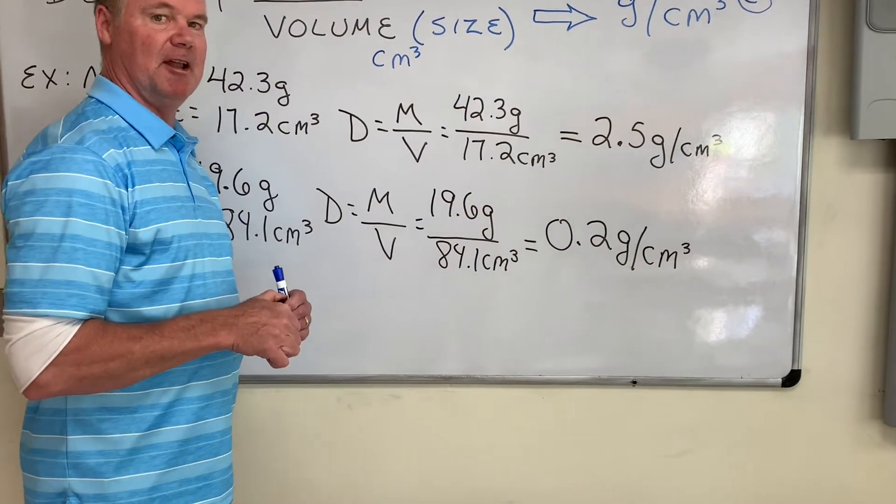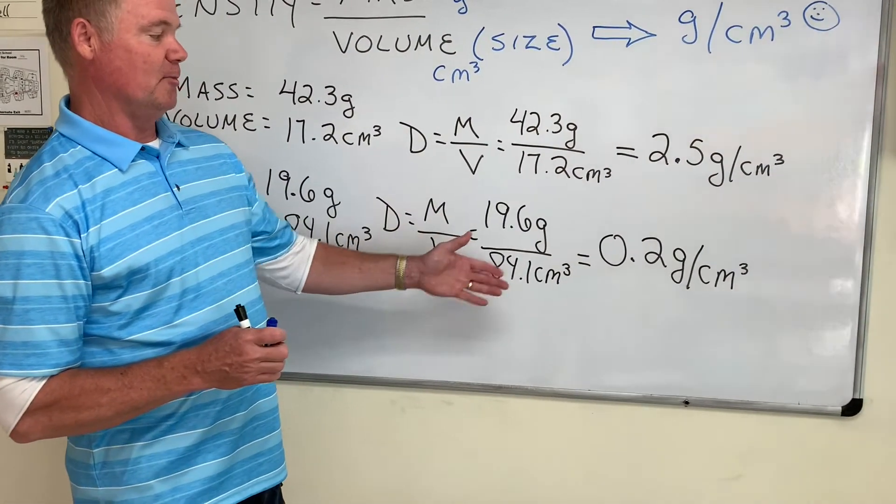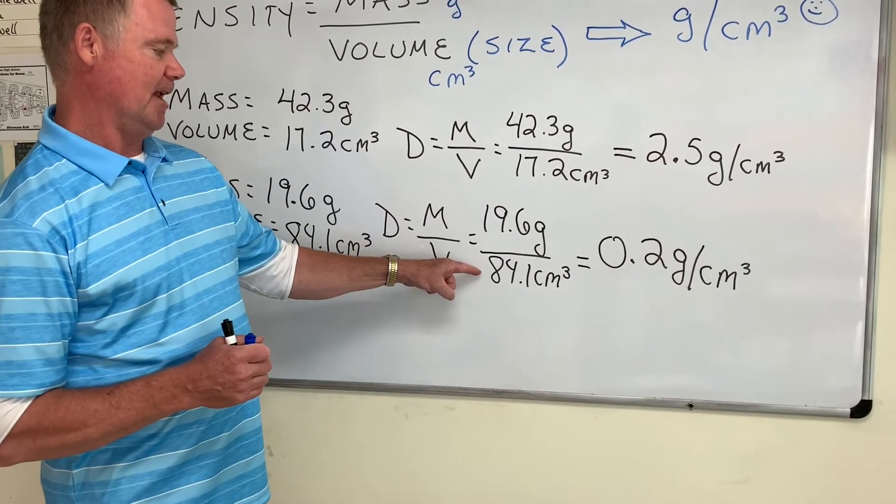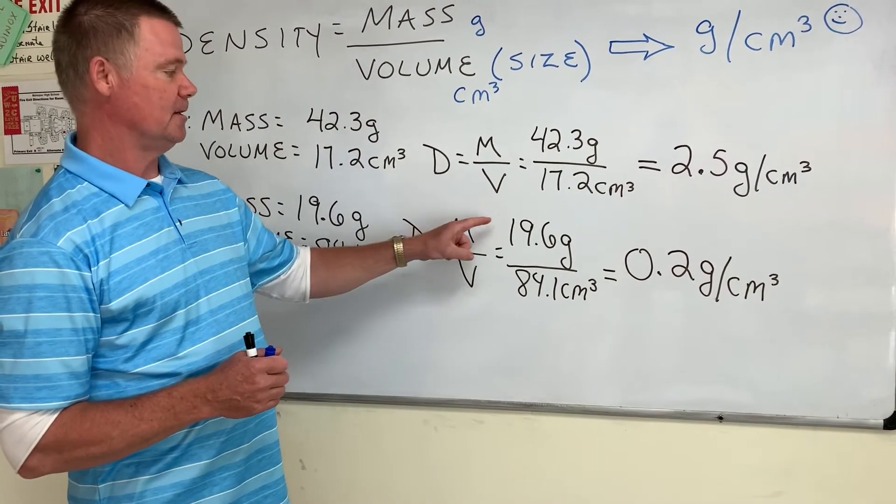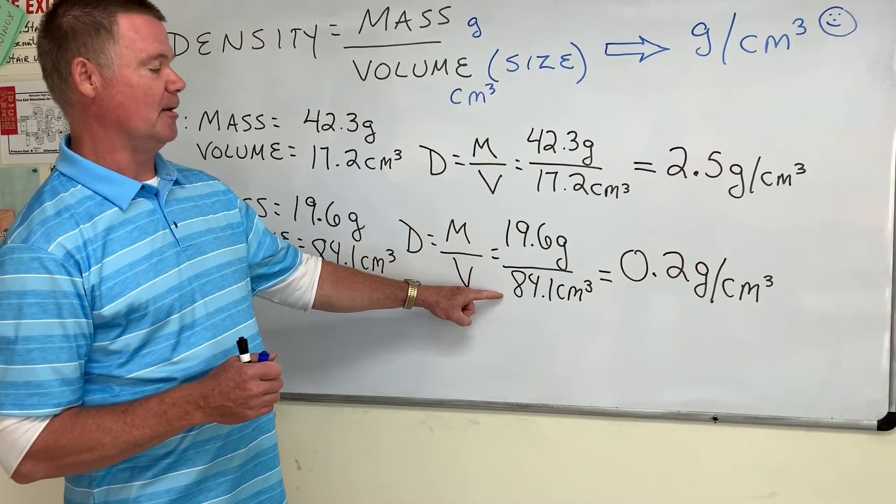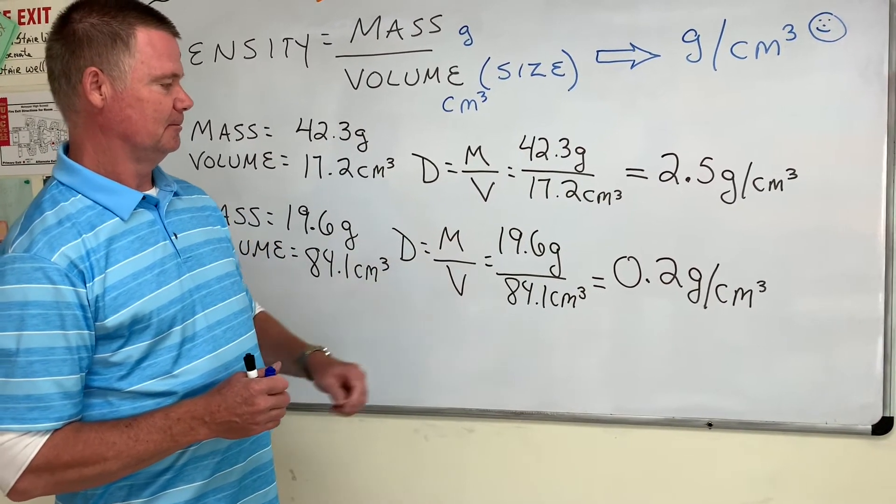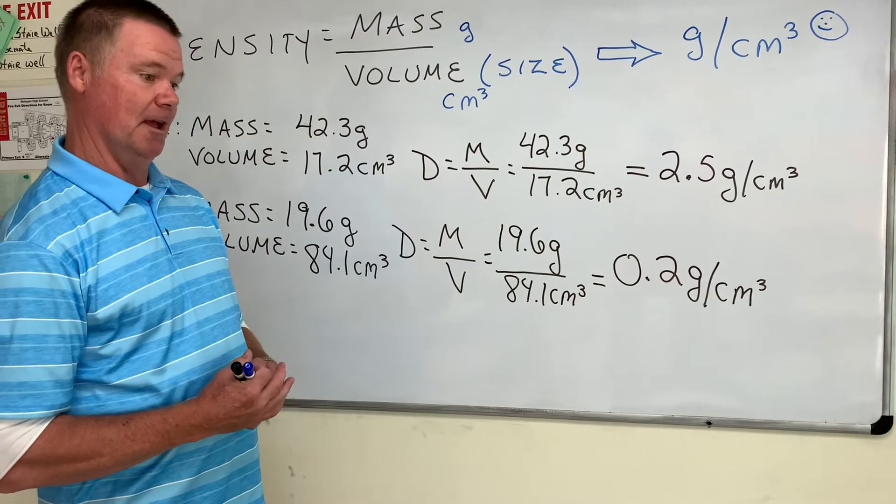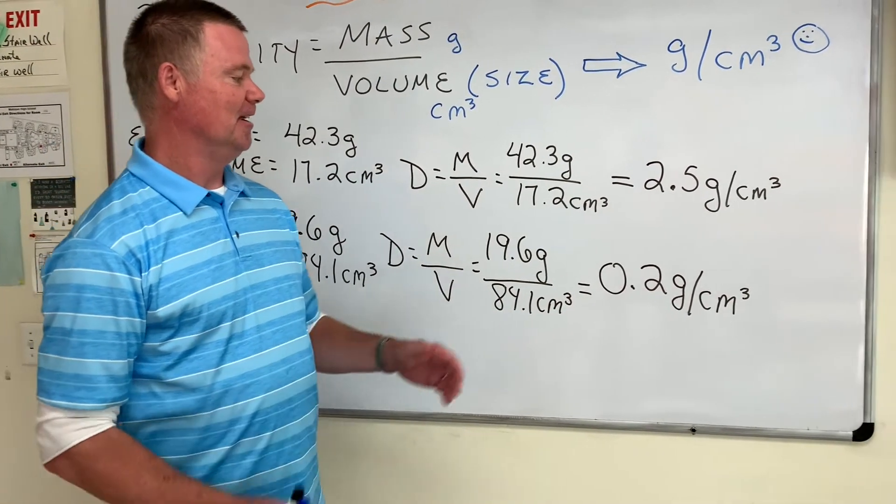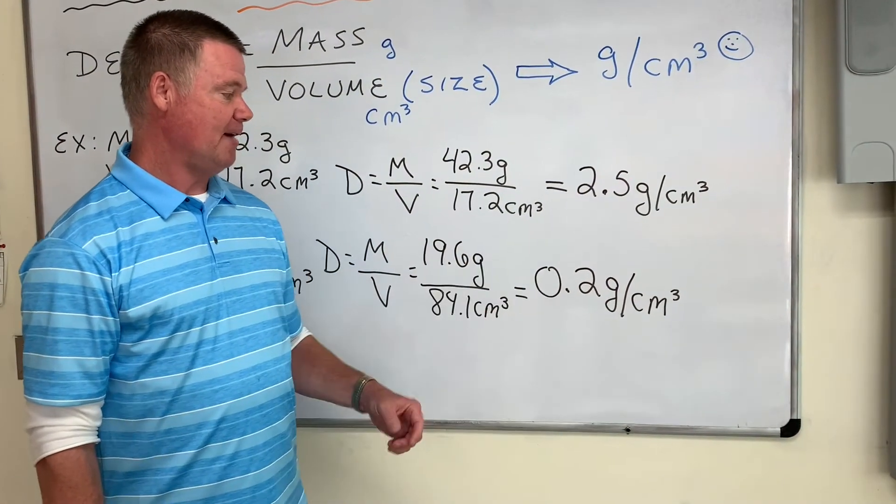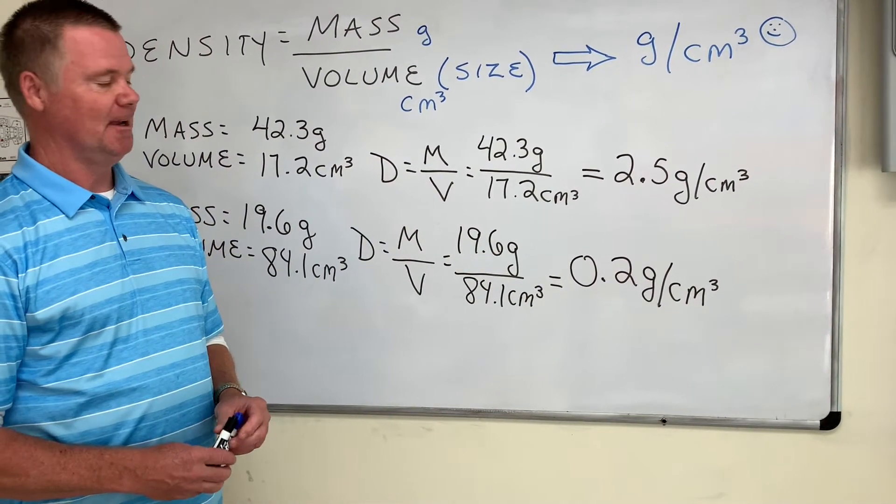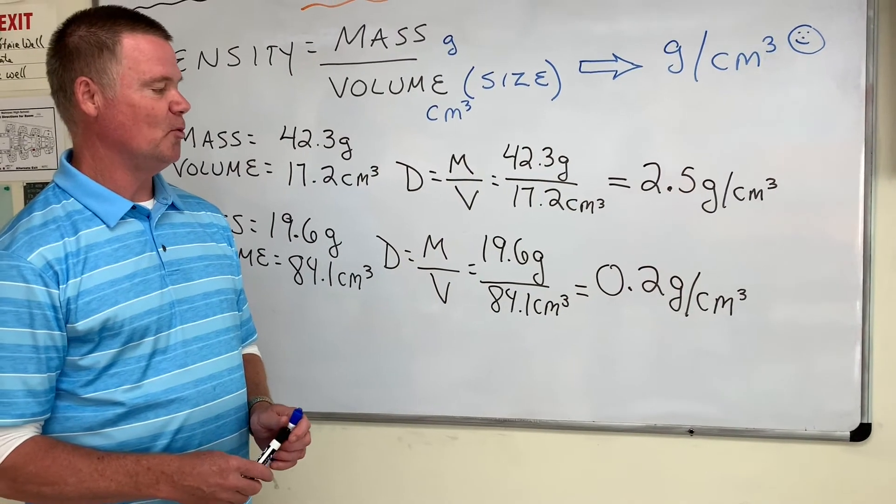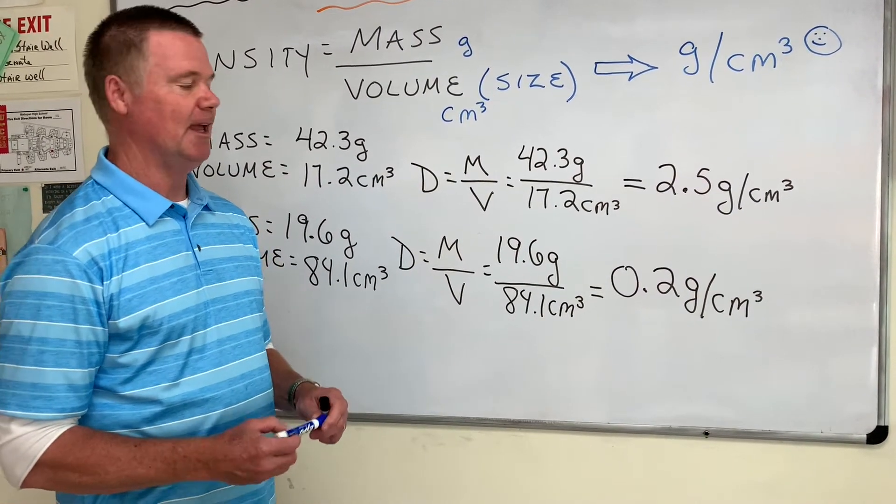Remember, ladies and gentlemen, don't break the rules of math. It's always top number divided by the bottom number. But that number is less than one. Yes, it is. Great observation. So we figured out you can have densities that are less than 1.0, and I think you know what that means. Anything less than 1.0 will float in water.